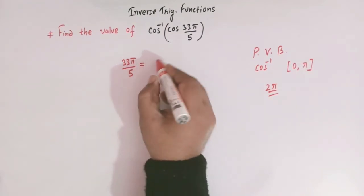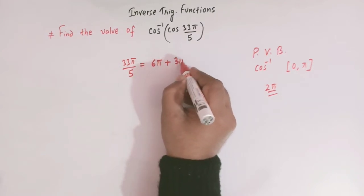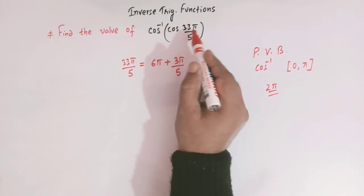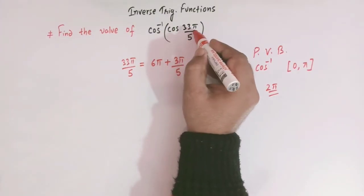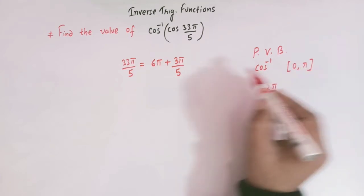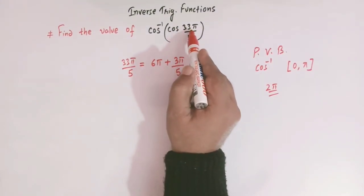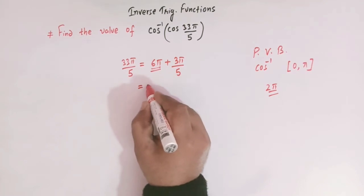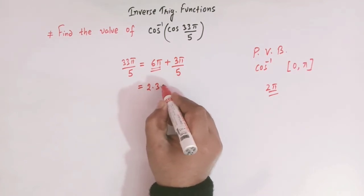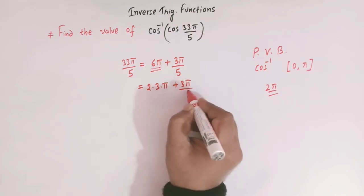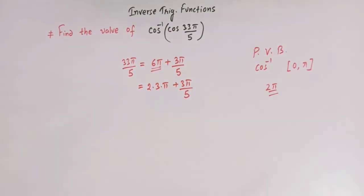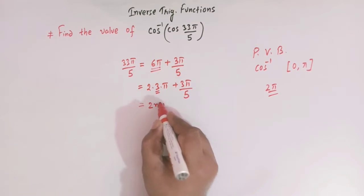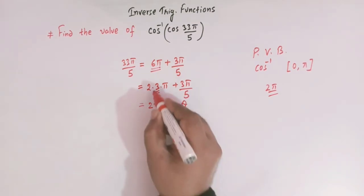Let us write 33π/5 as 6π + 3π/5. In these types of cases, when the angle does not fall in the interval 0 to π, we express the angle in terms of 2π. So we can write 6π as 2π × 3, giving us 2(3)π + 3π/5, which is of the form 2nπ + θ.